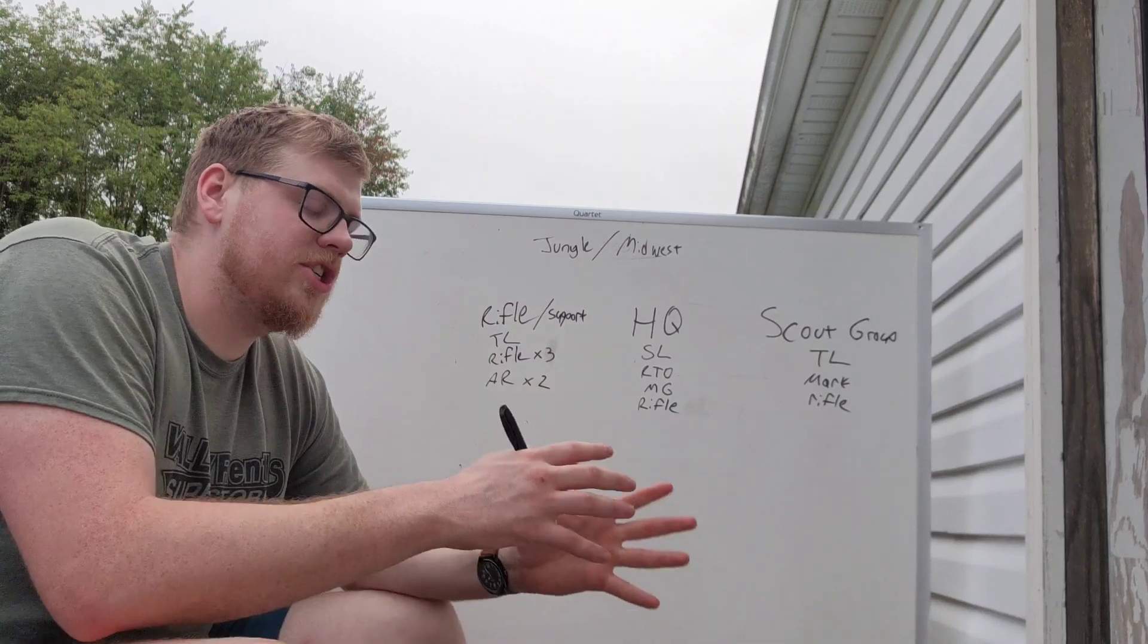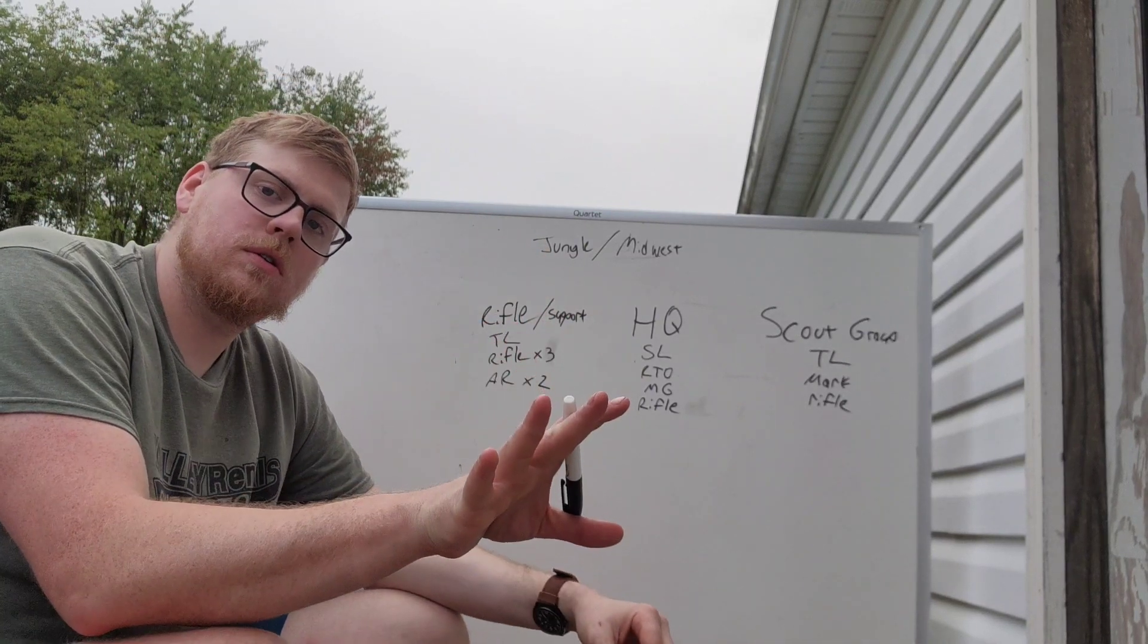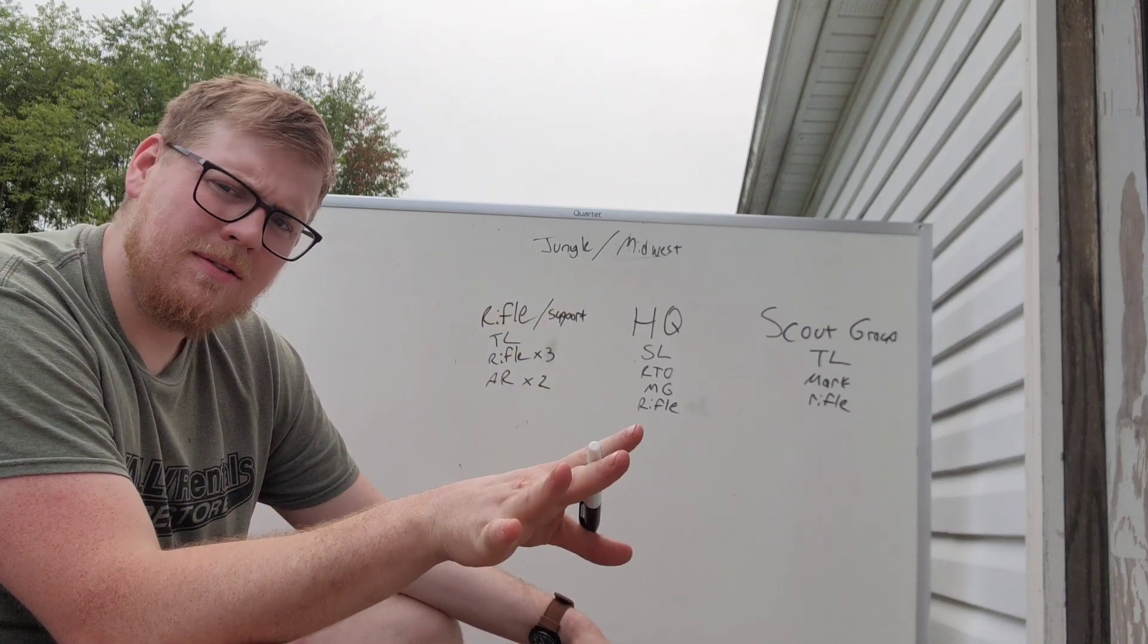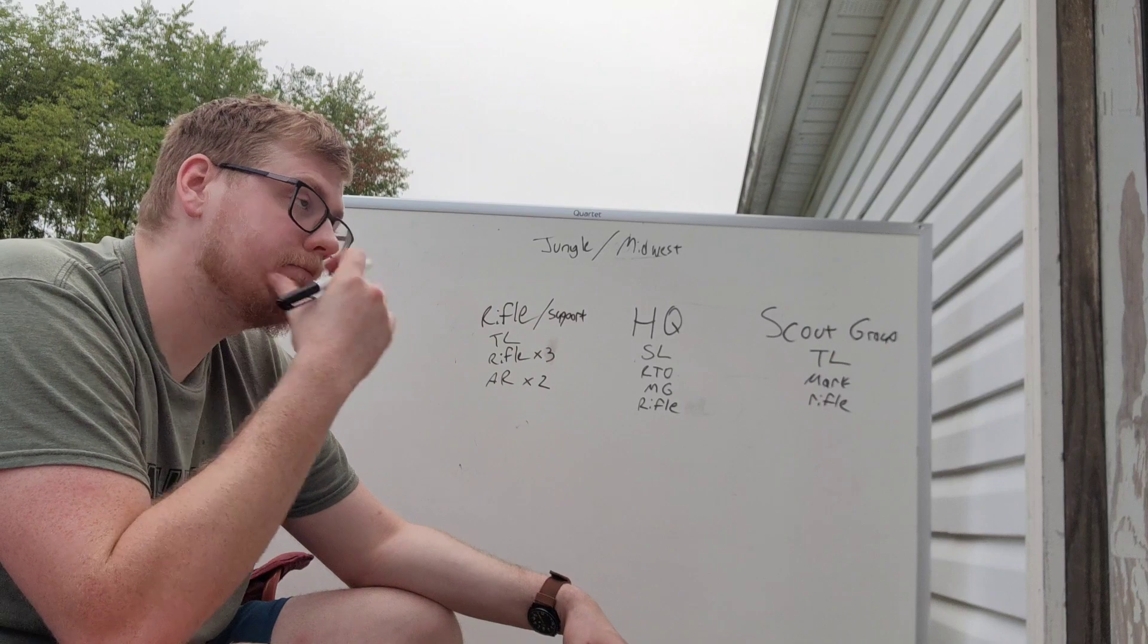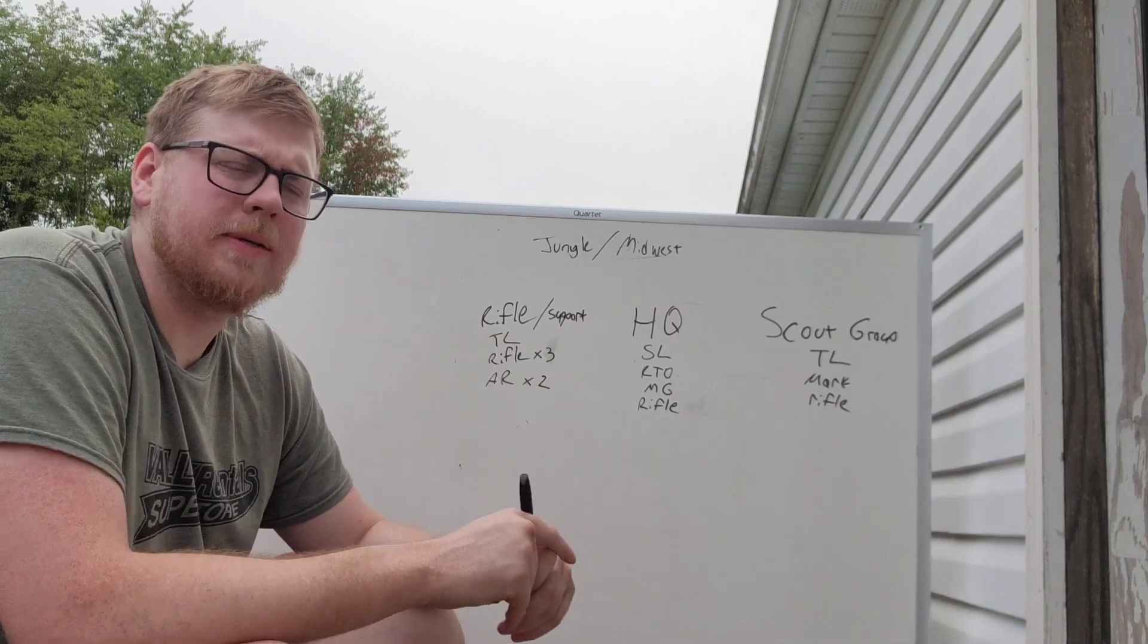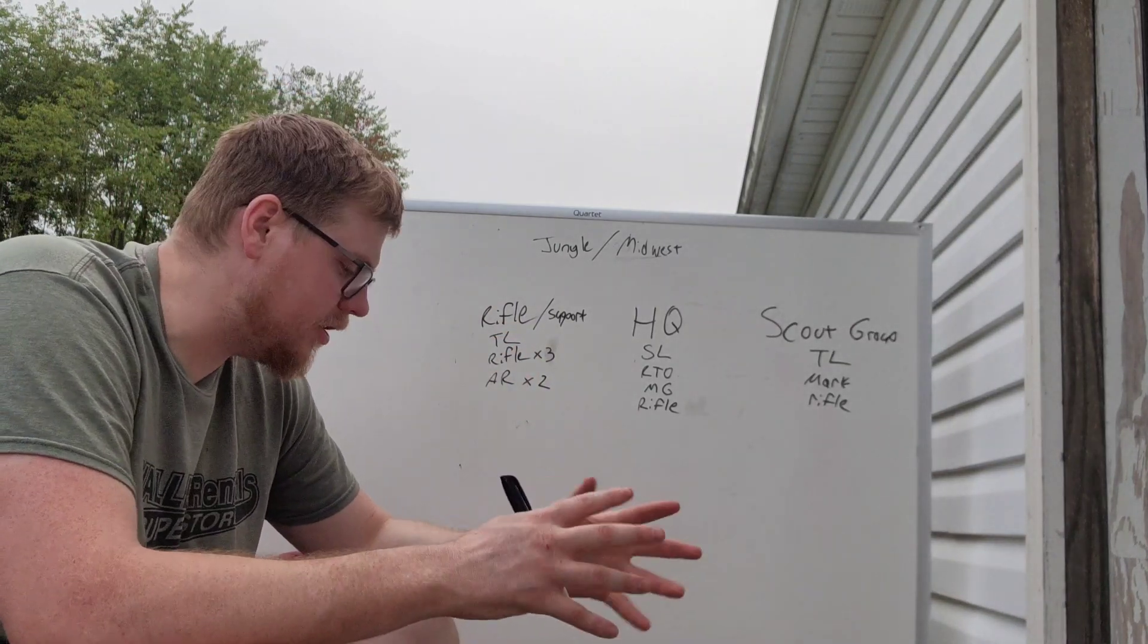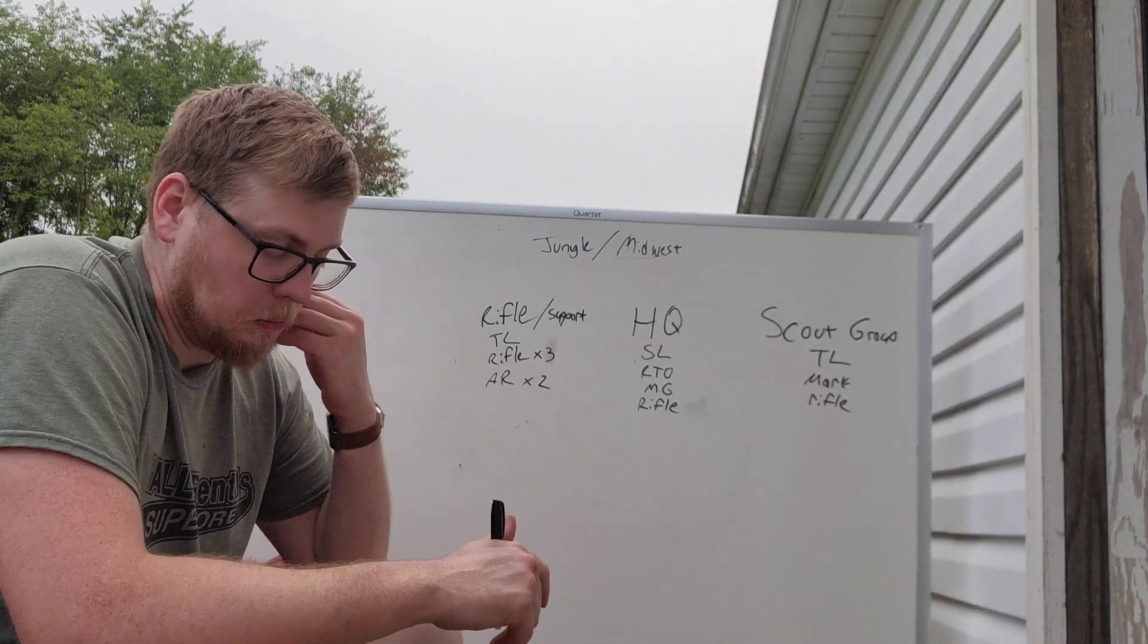Team leaders. These just need to be competent individuals that understand squad level tactics, which we're not going to cover in this video. That is a topic for another day. The only thing I will say on squad level tactics is maybe don't focus so much on training like your enemy. Maybe start looking at the people who have fought your enemy and I'll leave it at that. The team leaders, they need to have a very, very firm grasp on squad level tactics, not team level tactics, squad level tactics. They need to know their team's place like the back of their hand. There needs to be no doubt of what their next steps are when it comes to conducting battle drills.